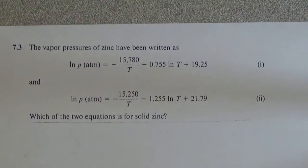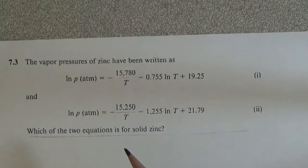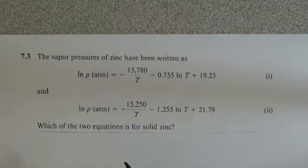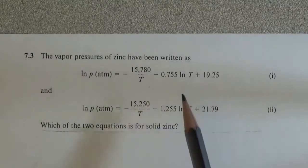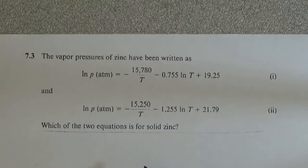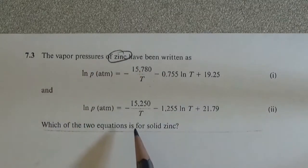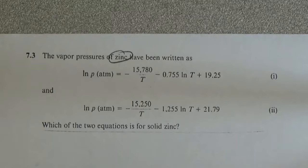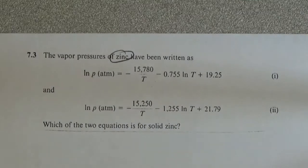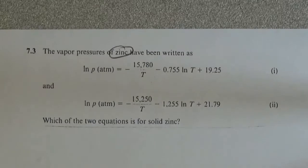Two equations expressing the equilibrium vapor pressure for a temperature, but they don't tell you which one of the equations is for solid and which one is for liquid. They tell you it's for zinc. So the question is, which of the two is for solid zinc?